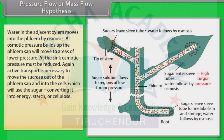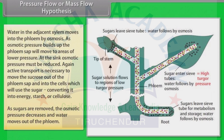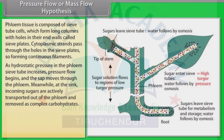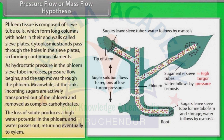At the sink, osmotic pressure must be reduced. Again, active transport is necessary to move the sucrose out of the phloem sap and into the cells, which will use the sugar, converting it into energy, starch or cellulose. As sugars are removed, the osmotic pressure decreases and water moves out of the phloem. Phloem tissue is composed of sieve tube cells, which form long columns with holes in their end walls called sieve plates. Cytoplasmic strands pass through the holes in the sieve plates, forming continuous filaments. As hydrostatic pressure in the phloem's sieve tube increases, pressure flow begins and the sap moves through the phloem. Meanwhile, at the sink, incoming sugars are actively transported out of the phloem and removed as complex carbohydrates. The loss of solute produces a high water potential in the phloem, and water passes out, returning eventually to the xylem.